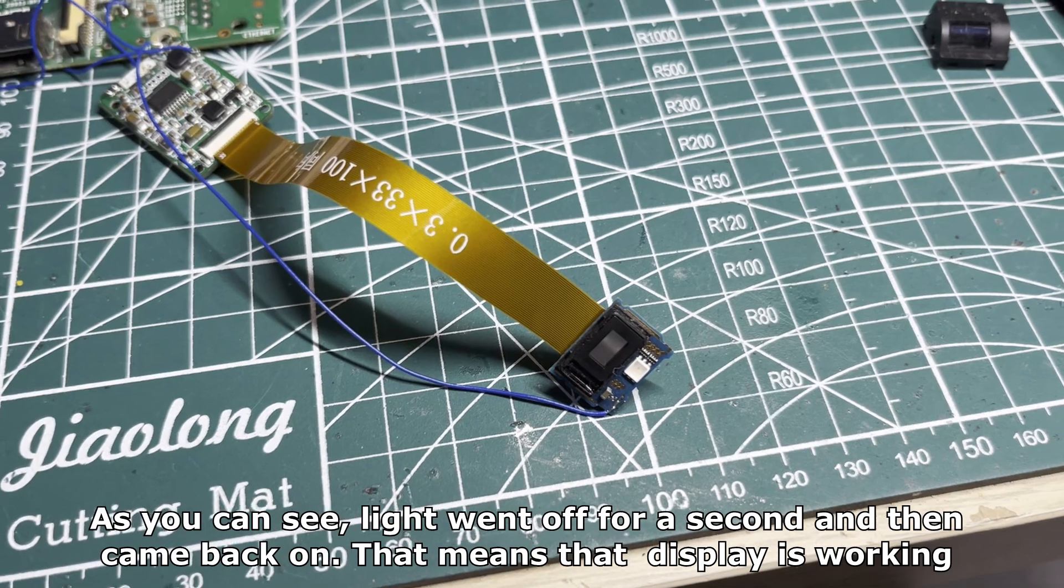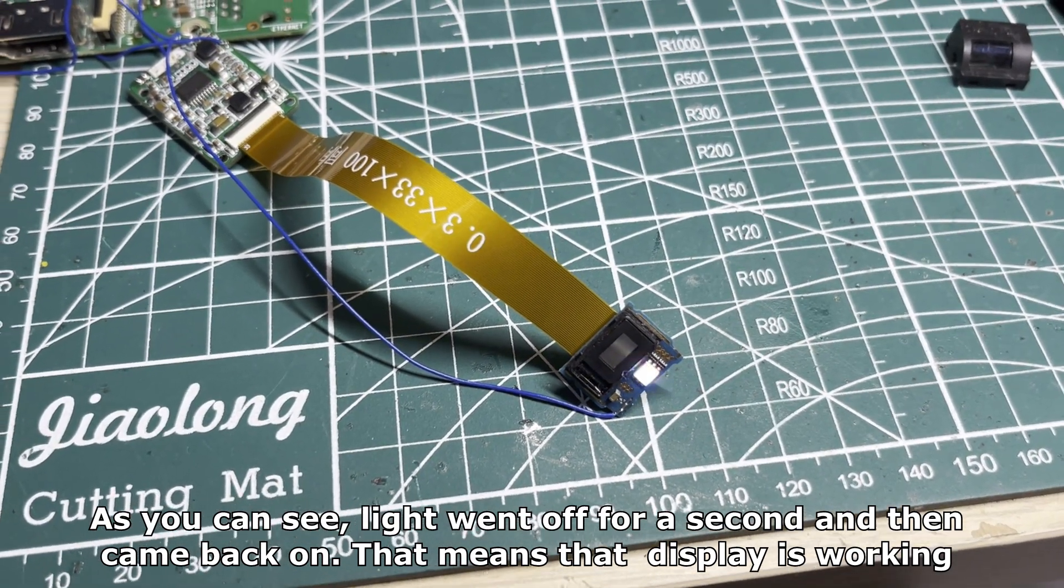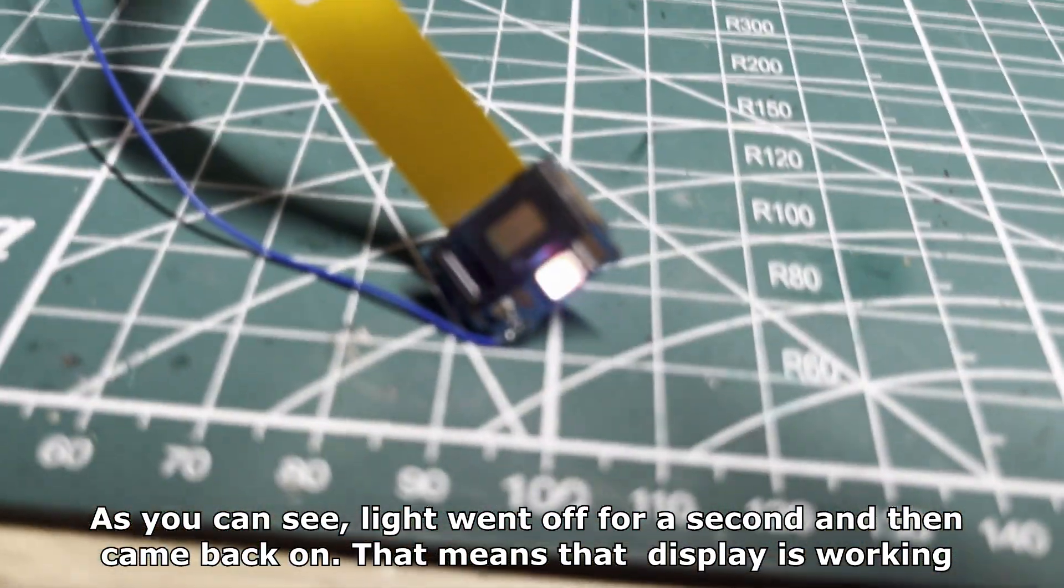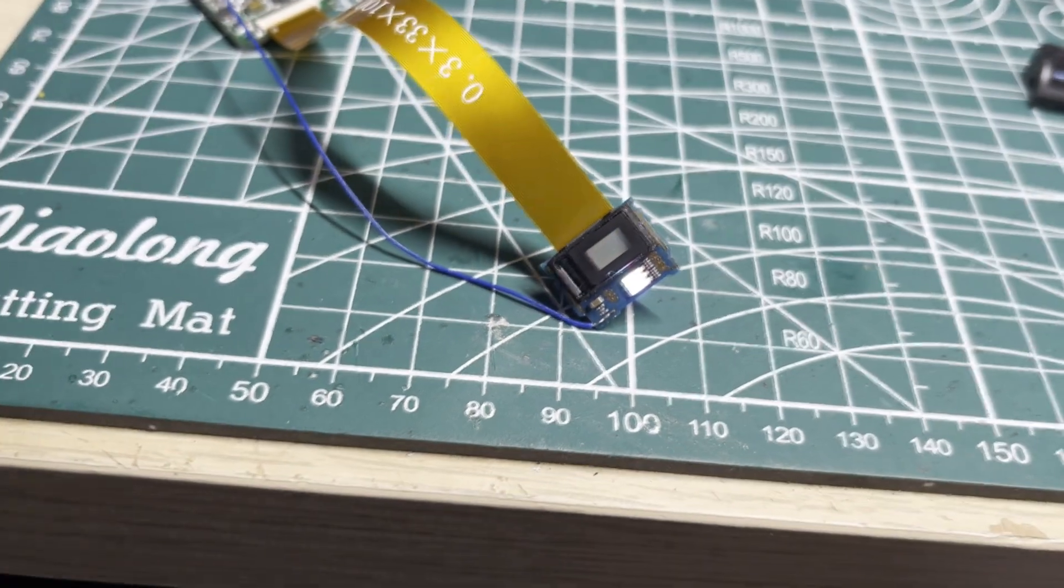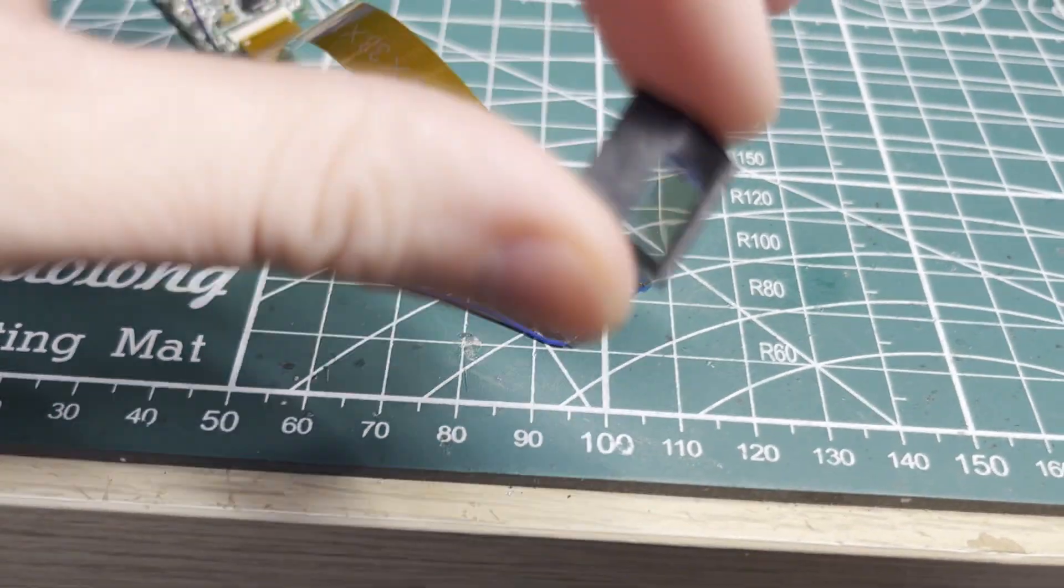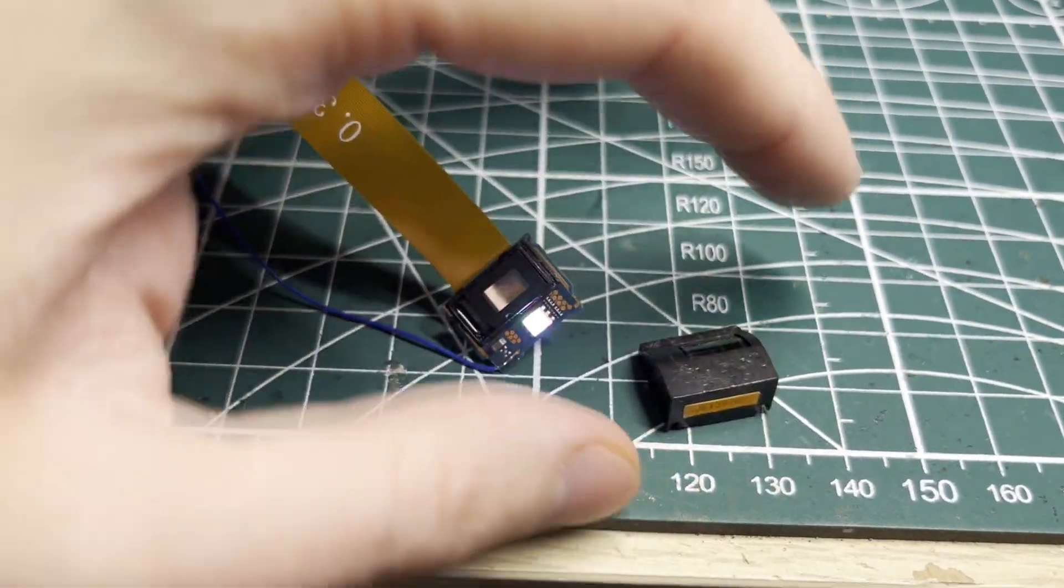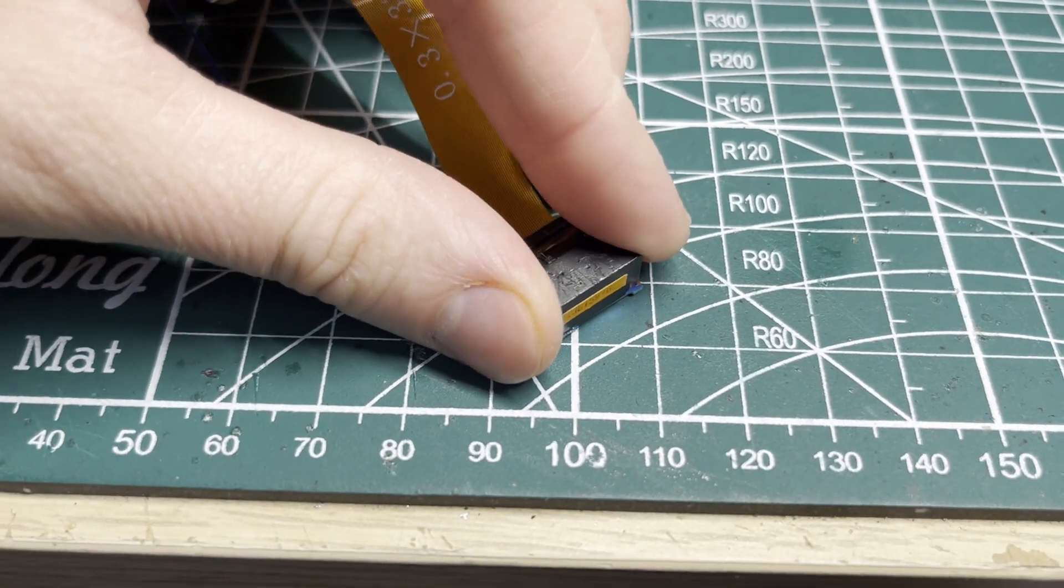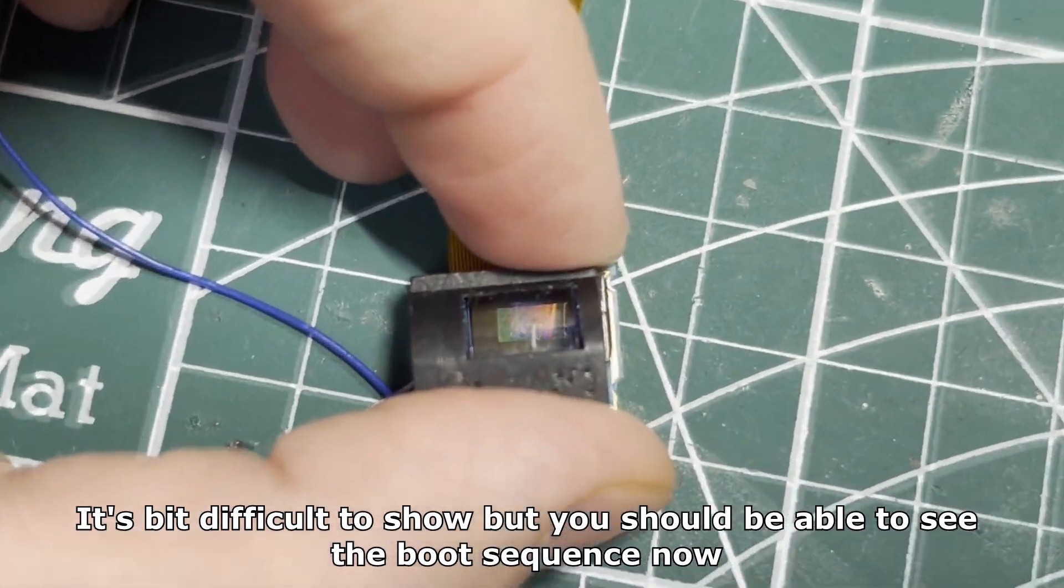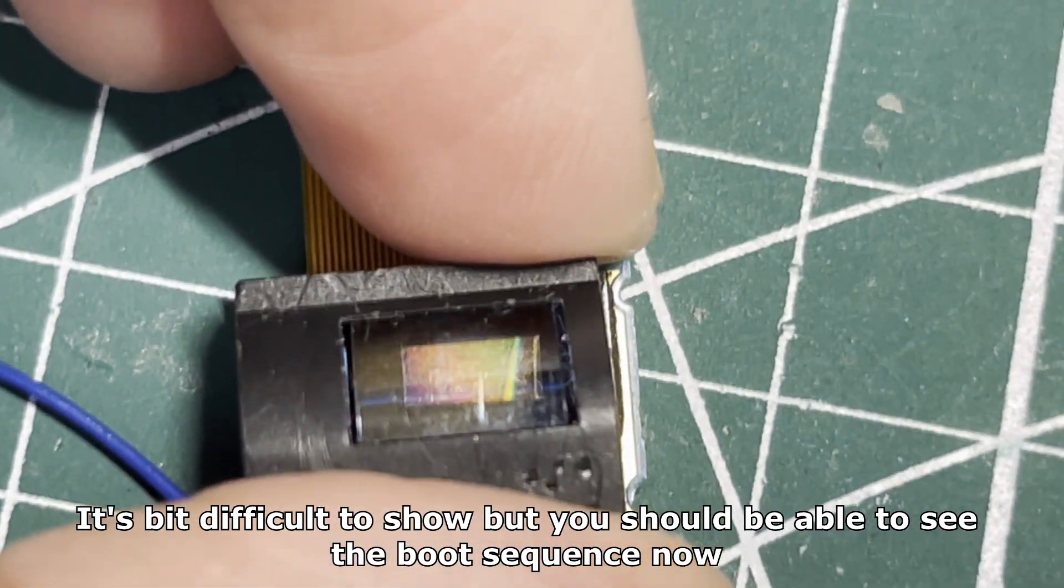As you can see, the light went off for a second and then came back on. That means the display is working. You still need the black part to actually see the image. It's a bit difficult to show, but you should be able to see the boot sequence now.